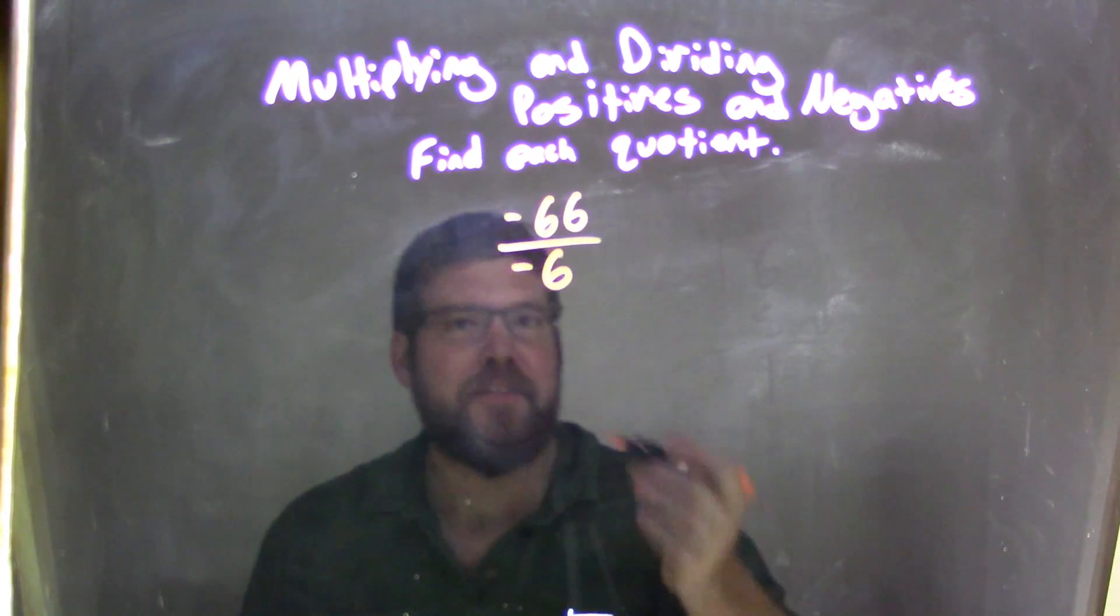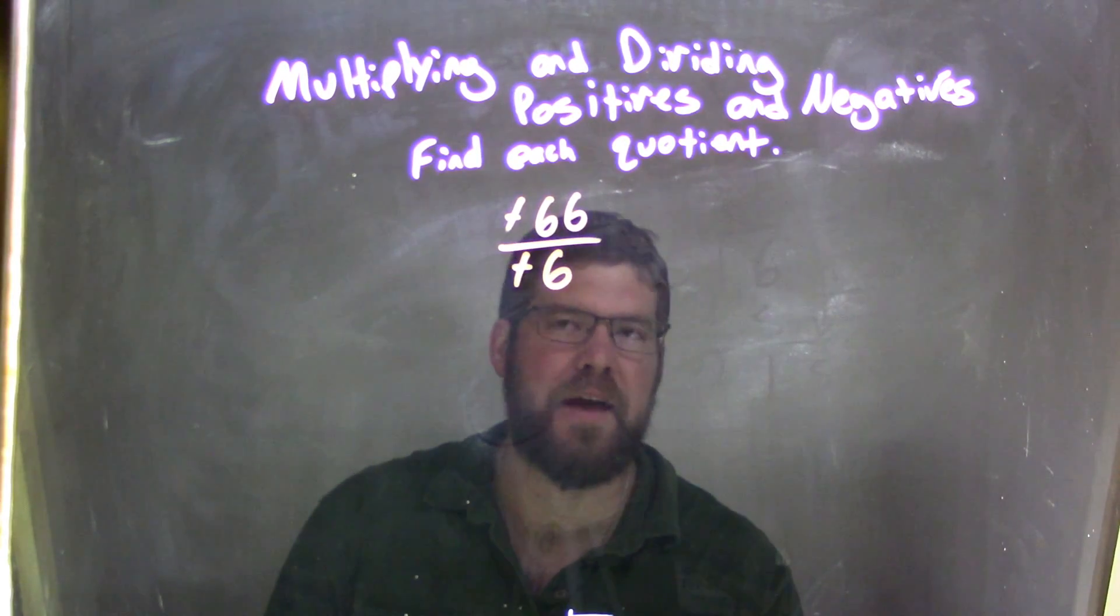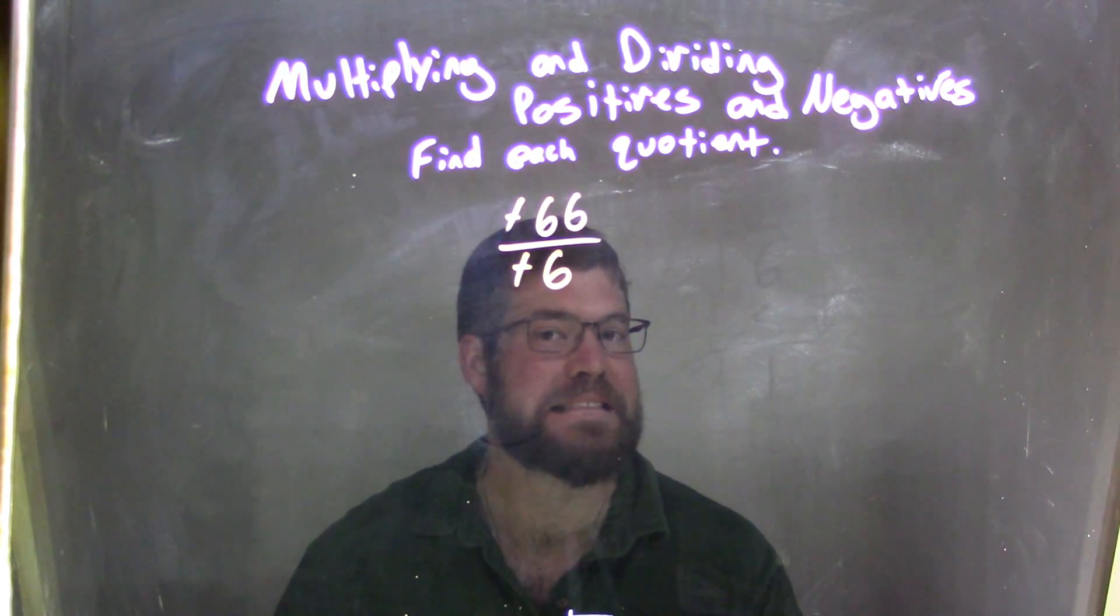Well, the negatives, we know, since there's a negative numerator, negative denominator, we can cancel those out. So they're just positives now. So it's 66 divided by 6.